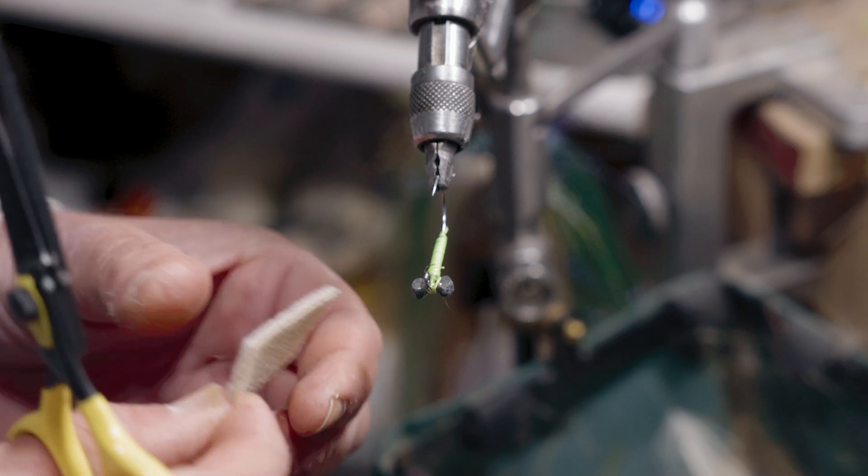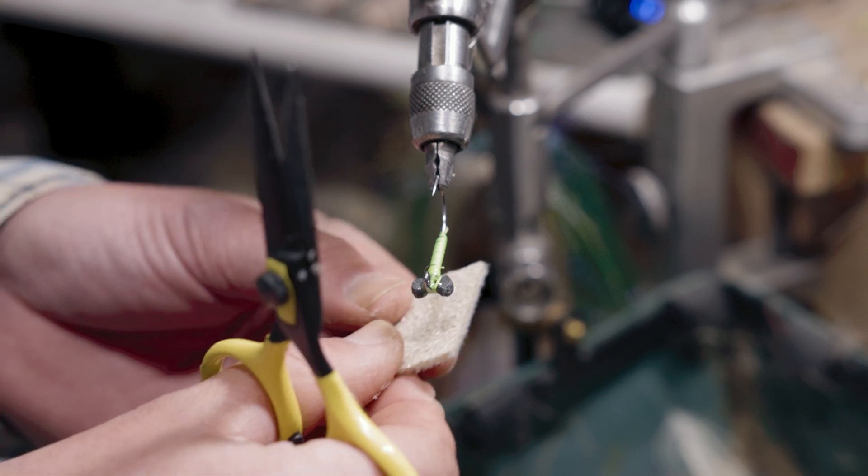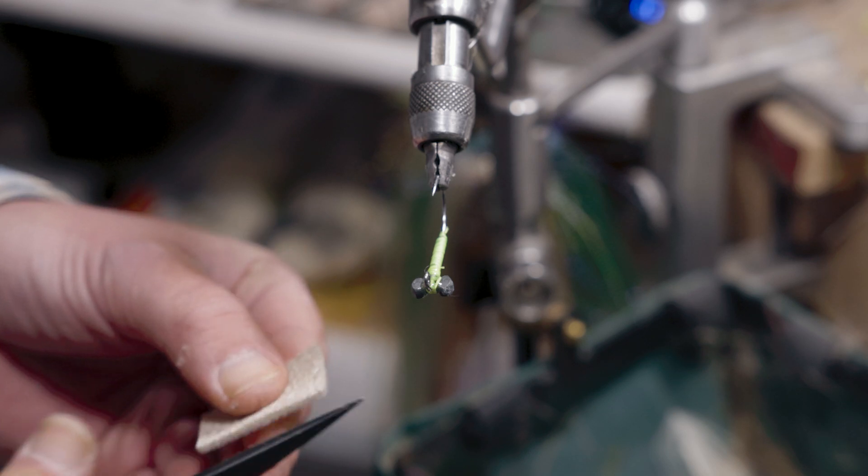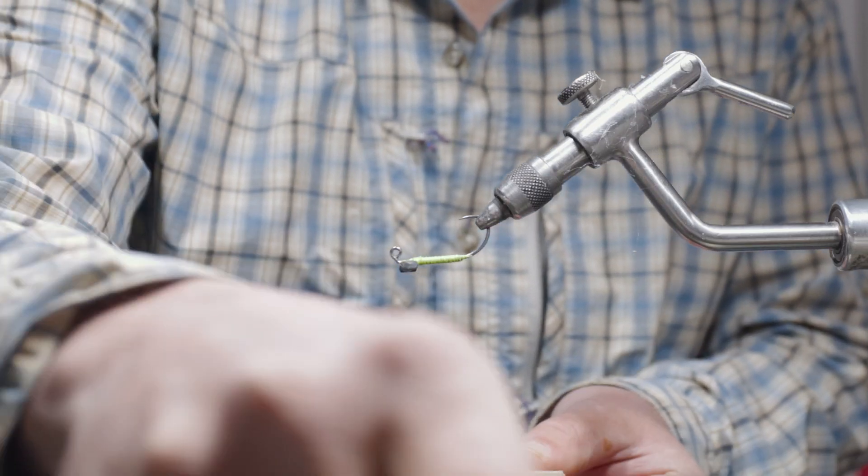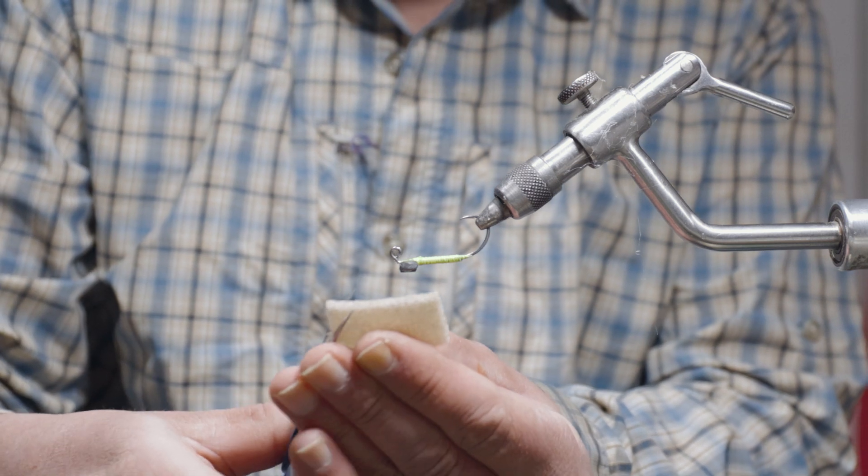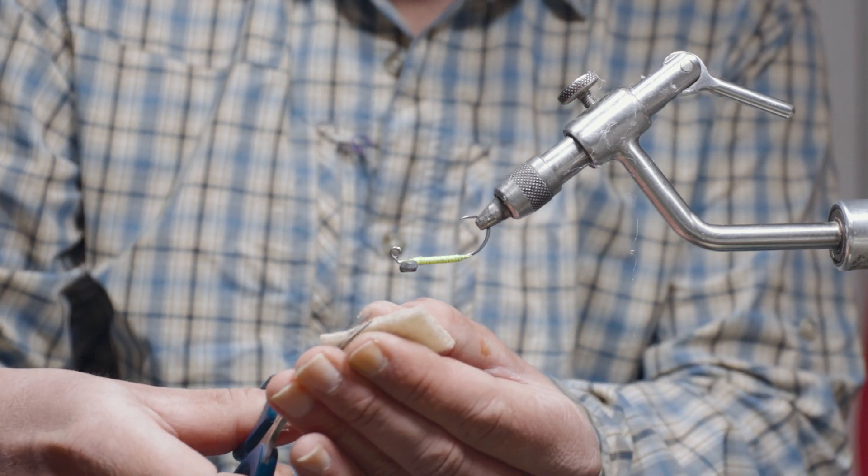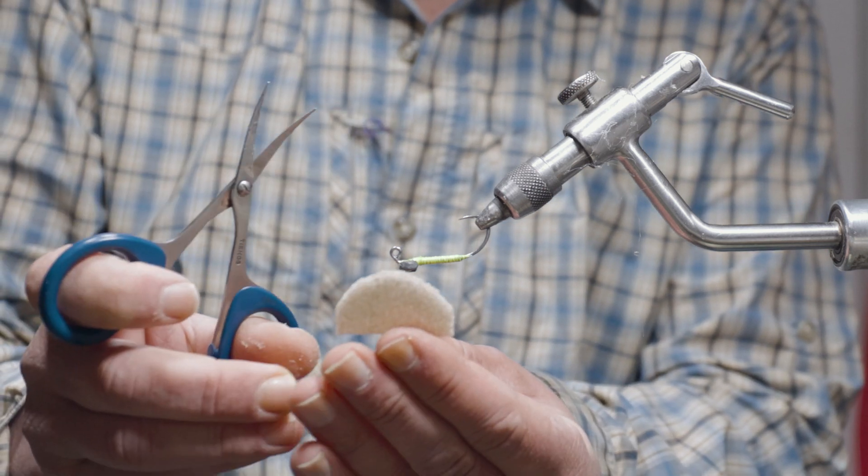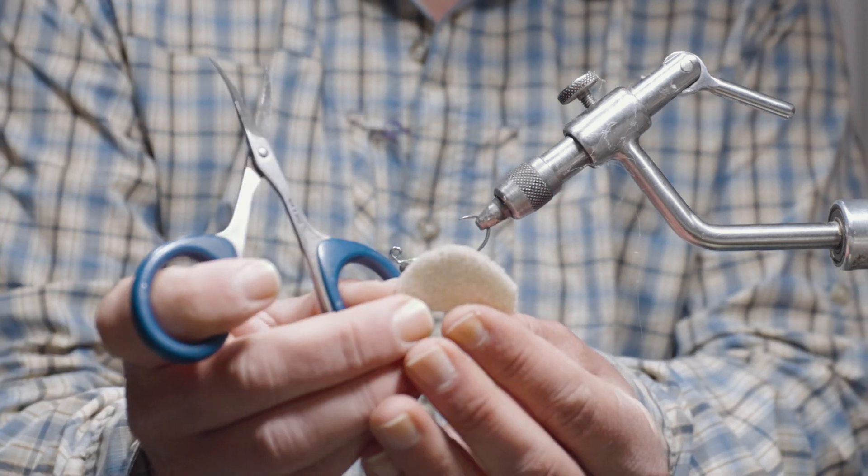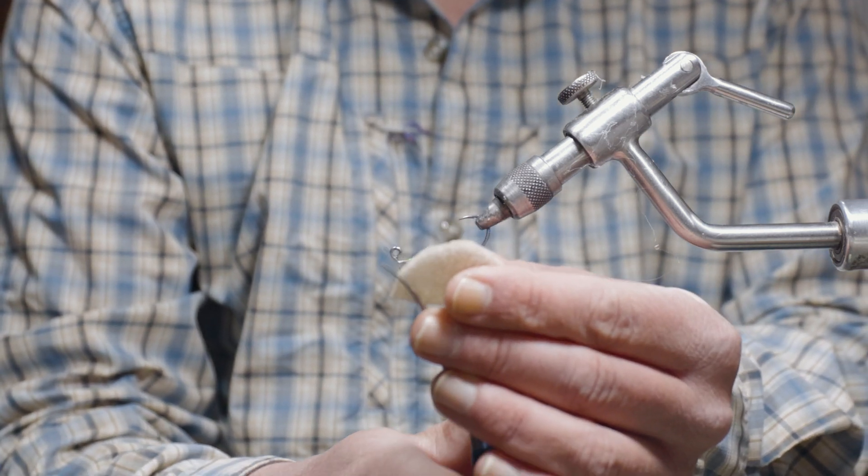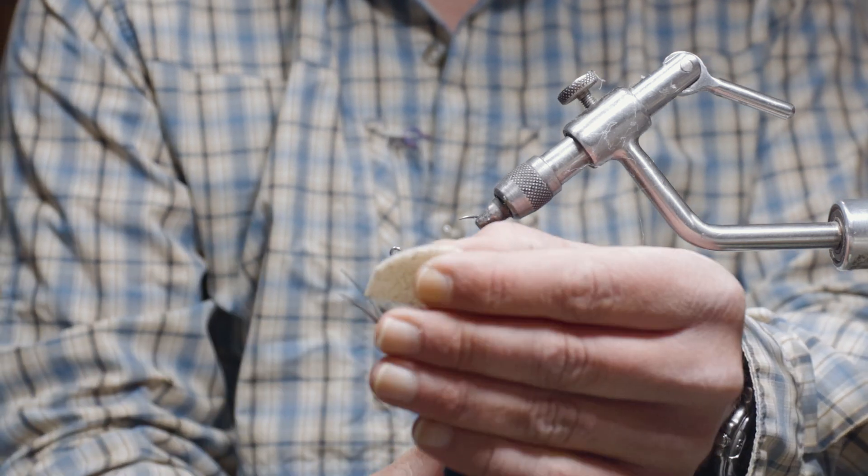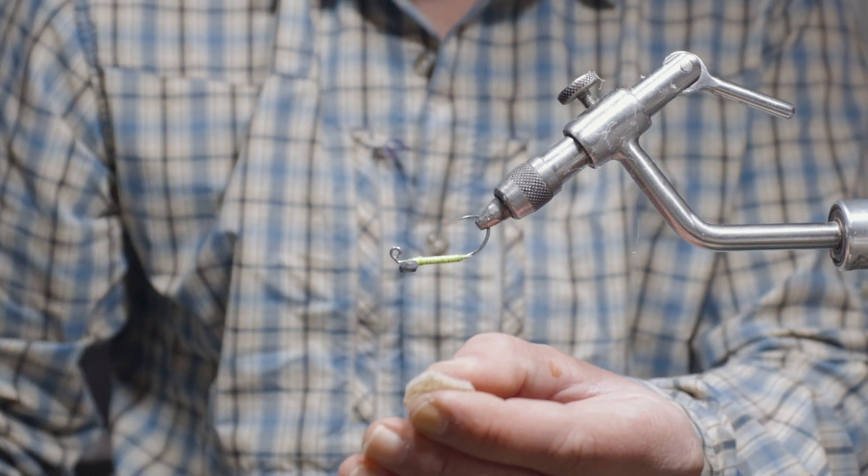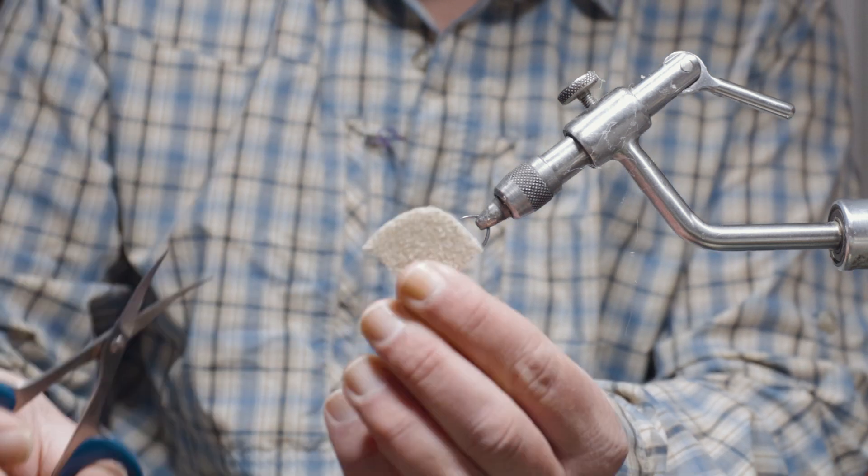So we're going to take some furry foam and cut that into a rectangle that's just a little bit bigger than the dimensions of the hook. And we're going to take some curved scissors and cut out an approximate blue crab shape. I'm going to kind of round like so, and then I'm going to reverse the curve on these curved scissors and kind of cut what's going to be the back of the crab.